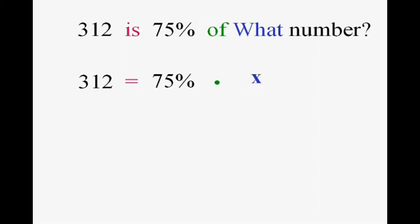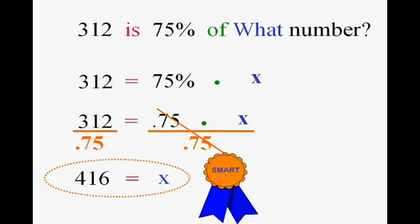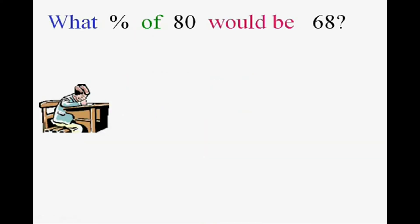Now I've got to solve for x. In this case, x is not alone. So first I'll replace that seventy-five percent with the correct decimal. Then, what do I have to do to get rid of the seventy-five one-hundredths? He's multiplying x, so I'll divide — I've got to do it to both sides. I'll end up with x equals 312 divided by seventy-five one-hundredths, which ends up being four hundred and sixteen. Excellent — that's the answer.